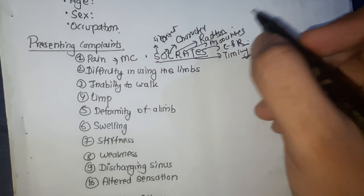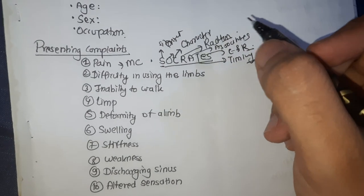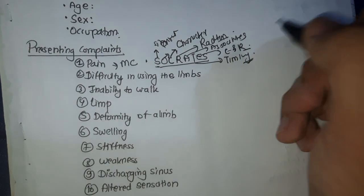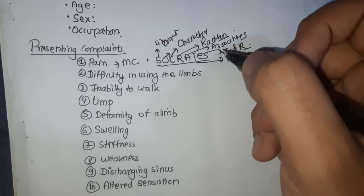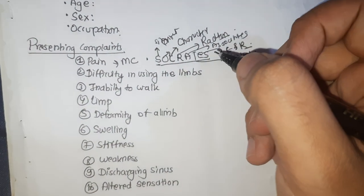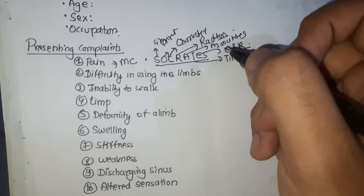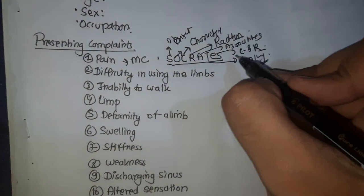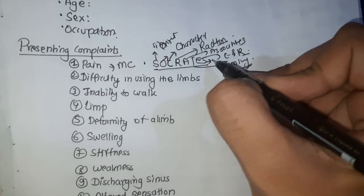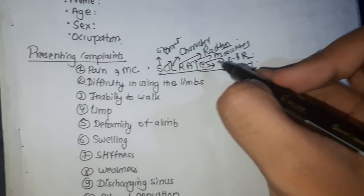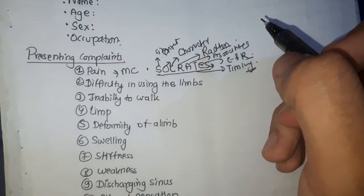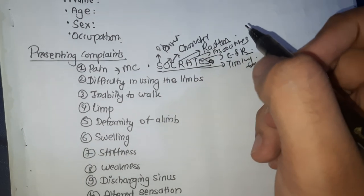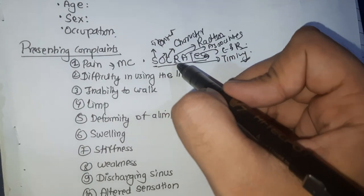Exacerbating and relieving factors — ask what aggravates and relieves the pain. Pain of mechanical origin becomes worse with activity and improves with rest. On the other hand, pain of chronic inflammation like osteoarthritis and rheumatoid arthritis comes up after a period of rest and improves with activity. Severity — ask whether the pain is severe, moderate, or mild. That covers all elements of SOCRATES for pain.